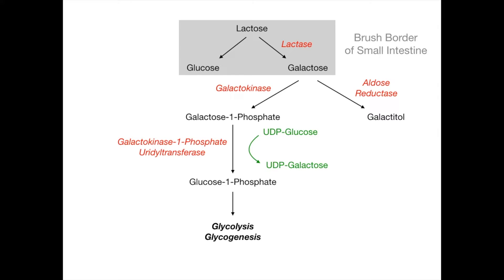This is the main pathway of galactose metabolism. You need to know the enzymes shown in red and the cofactor shown in green. Now let's talk about what happens if you have certain enzyme deficiencies.